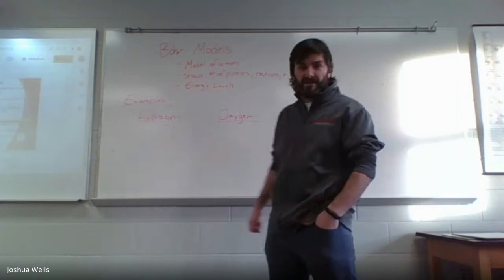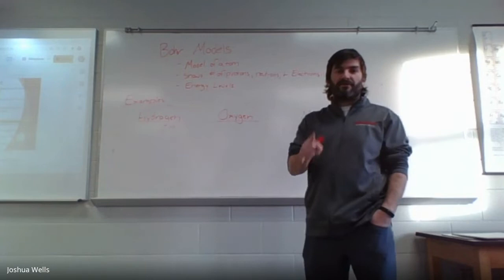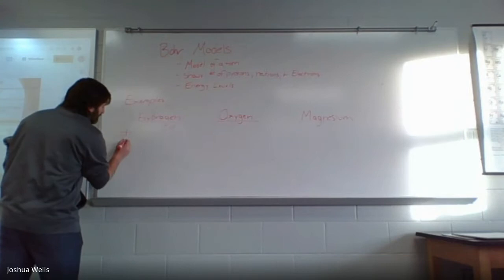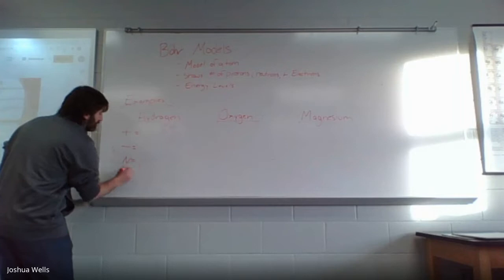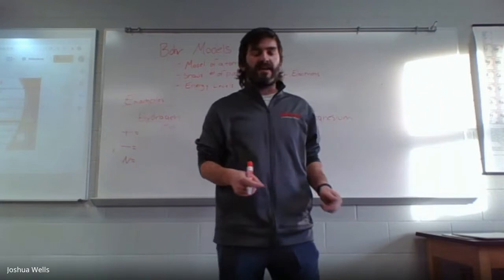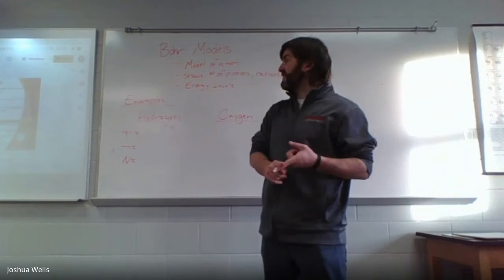I have three example elements on the board right now: hydrogen, oxygen, and magnesium. Whenever you are making a Bohr model, you always need to put the number of protons, the number of neutrons, and the number of electrons. I'm going to write that on the board — a plus for protons, a minus for electrons, and an N for neutrons. To figure out the number of protons, neutrons, and electrons, I'm going to go to the periodic table.